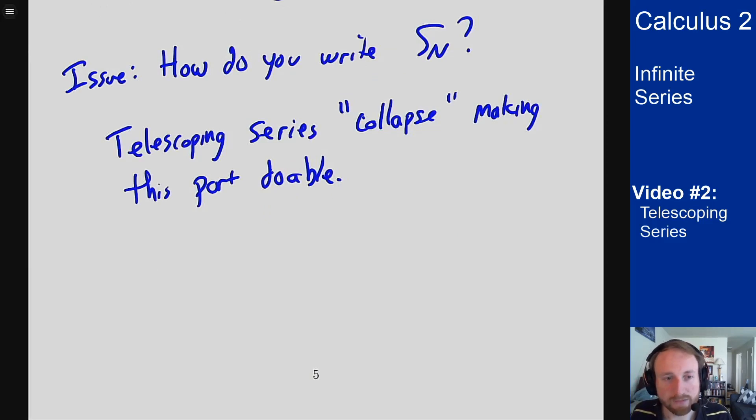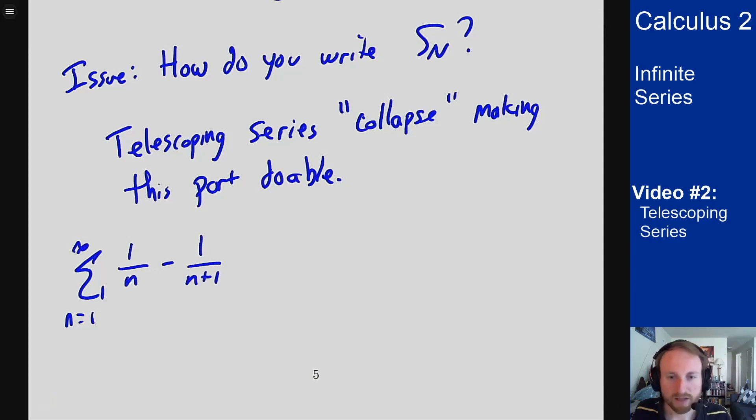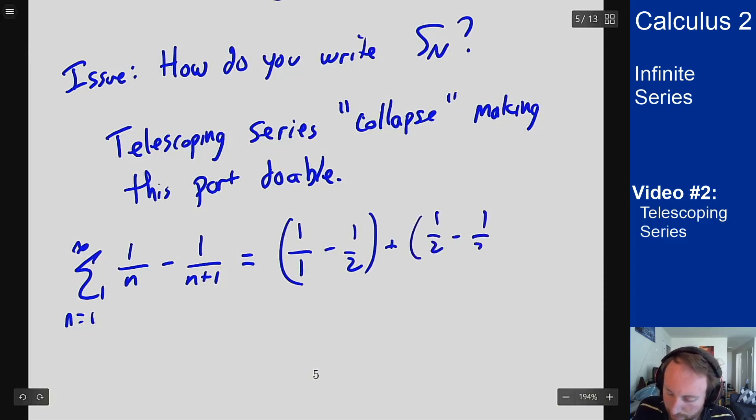So here's a vague idea of what this might look like in terms of a telescoping series. If I'm looking at the sum from n equals one to infinity of one over n minus one over n plus one, let's start writing out the first few terms of this series. So the first term, I'm plugging in one for n, so I get one over one minus one over two. For the second term, I get one over two minus one over three. For the third term, one over three minus one over four.